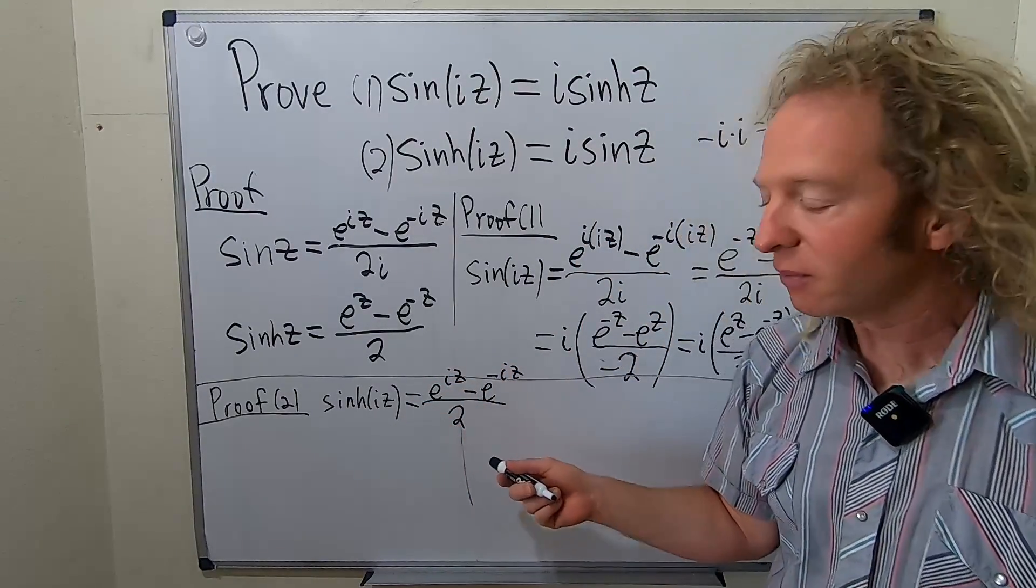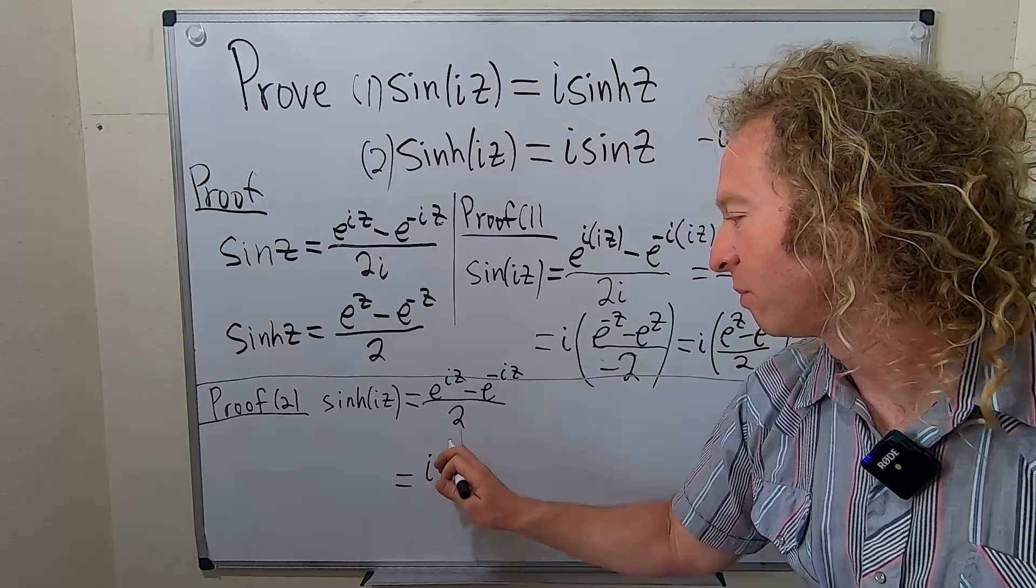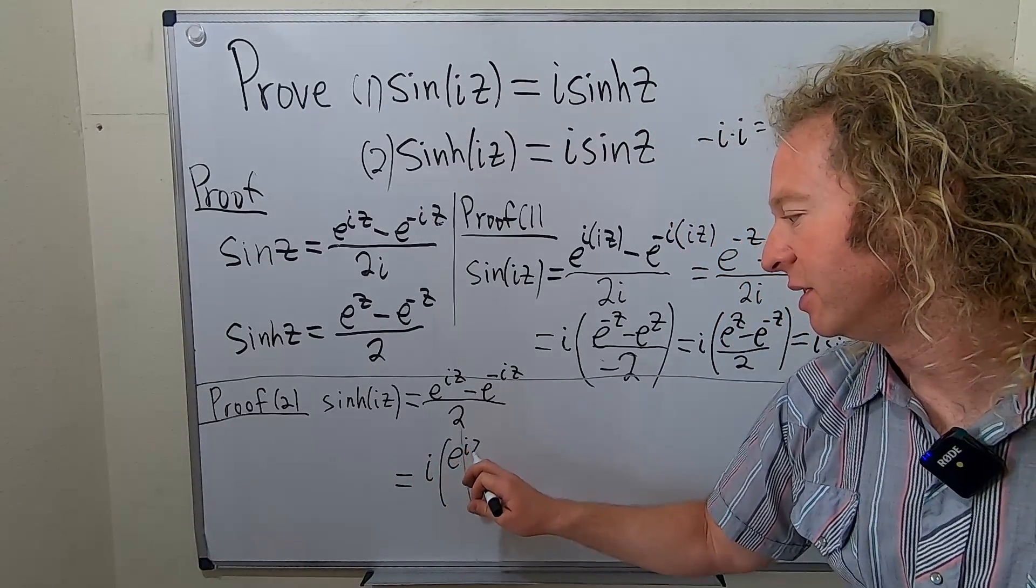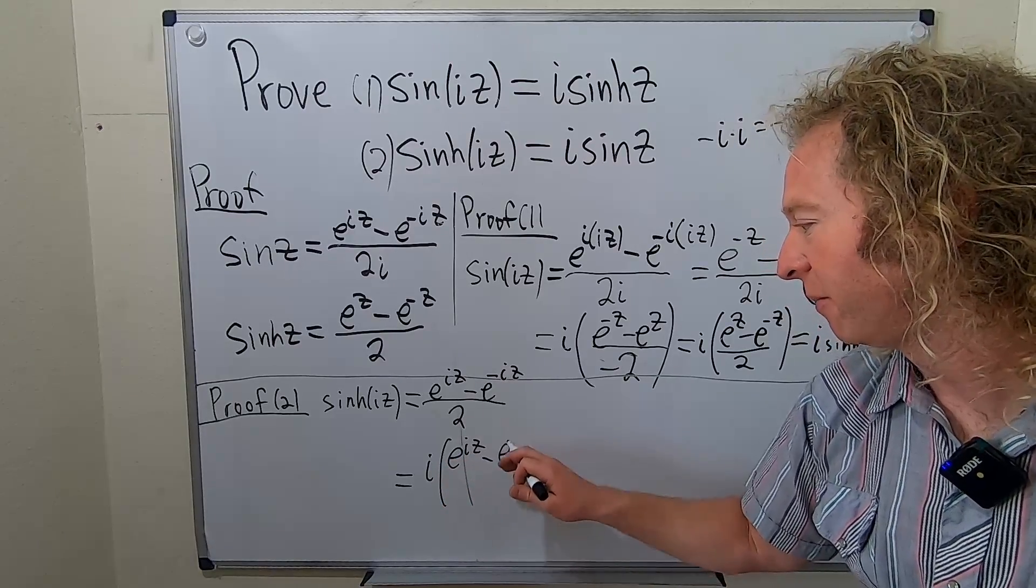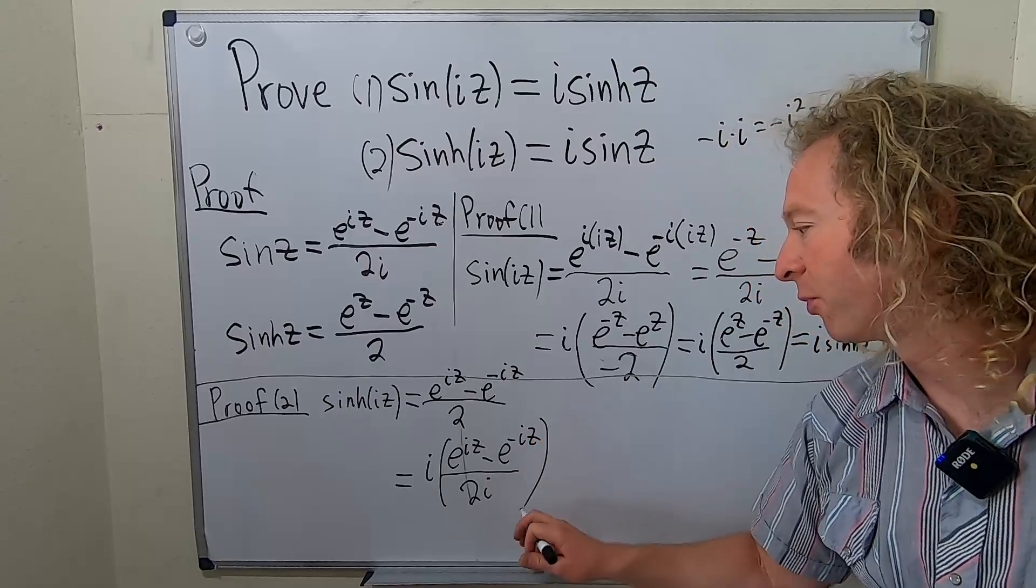So this is almost sin z, except it's missing the i. So what we can do is we can put it there in a clever way. We can write this as i parentheses e to the iz because we want an i there. So we put it there. And then when we attempt to take it away, we're pretty much done with the proof.